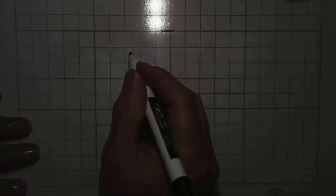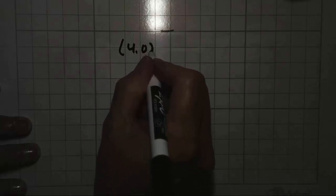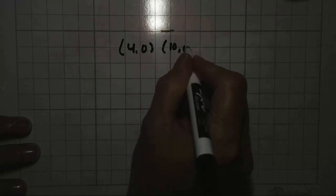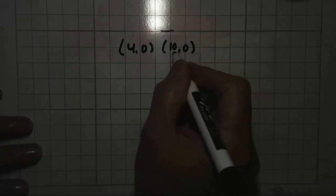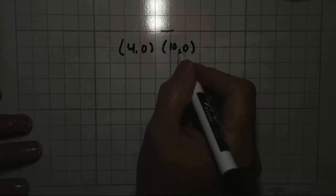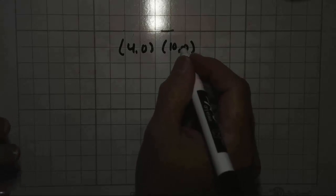You'll be given something like this. A line segment has the endpoints F is 4, 0 and G is 10, 0, and they want you to find the coordinates of the midpoint. Well, you could actually draw that line out and take a ruler and figure out where the midpoint is. But mathematically,